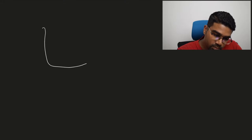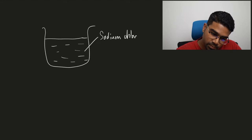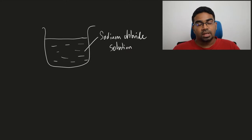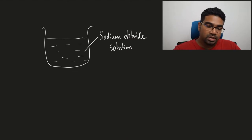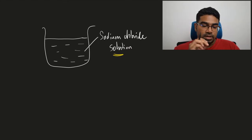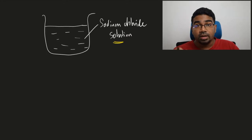Let's say we had a beaker filled with sodium chloride solution. Before we go any further we need to think about what sodium chloride solution actually is. Sodium chloride is of course a salt, and we have to remember that salts are ionic compounds. When we have an aqueous solution — which means it is dissolved in water — we have to remember that this sodium chloride is a soluble salt because it has formed a solution. So essentially what we have here is sodium chloride dissolved in water.